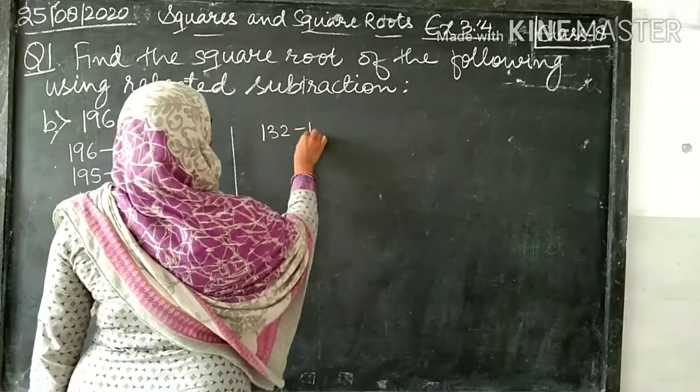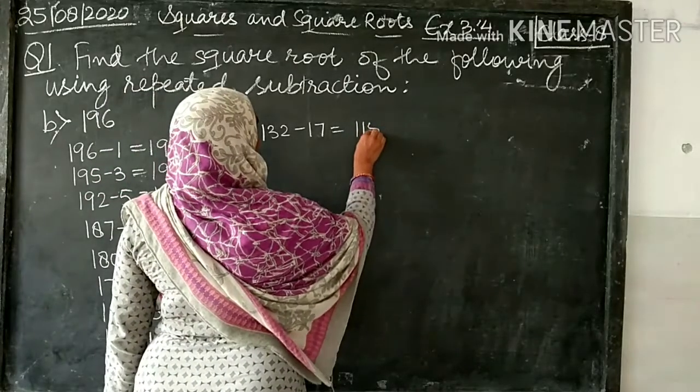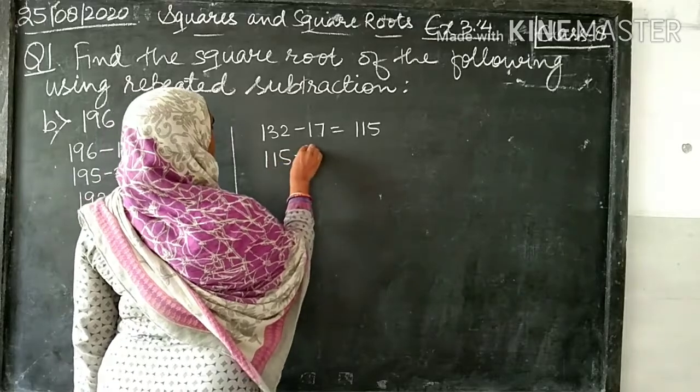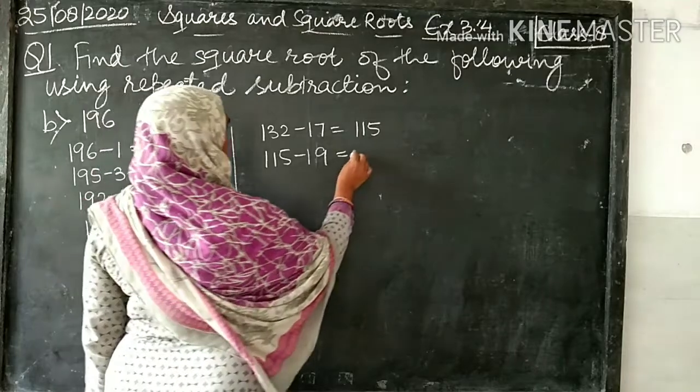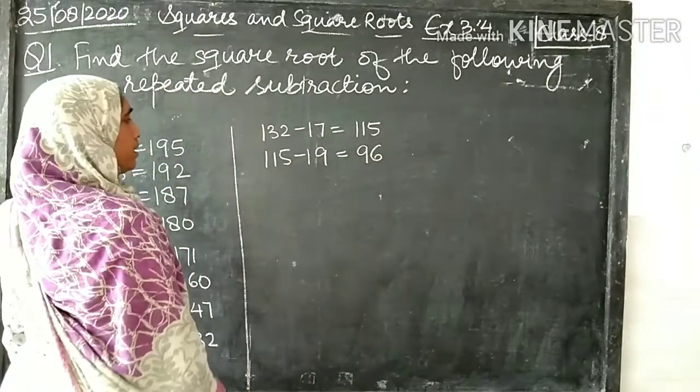132 minus 17 equals 115, minus 19 equals 96.